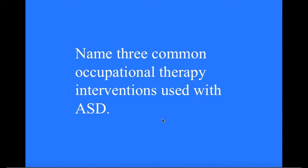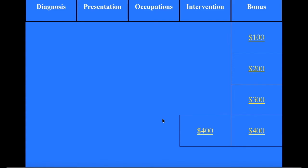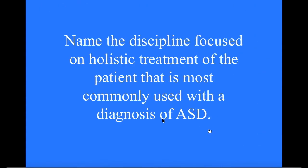Interventions for 300: Name three common occupational therapy interventions used with ASD. What are sensory integration, gross and fine motor control, and behavioral tactics? Interventions for 400: Name the discipline focused on holistic treatment of the patient most commonly used with a diagnosis of ASD. Occupational therapy.